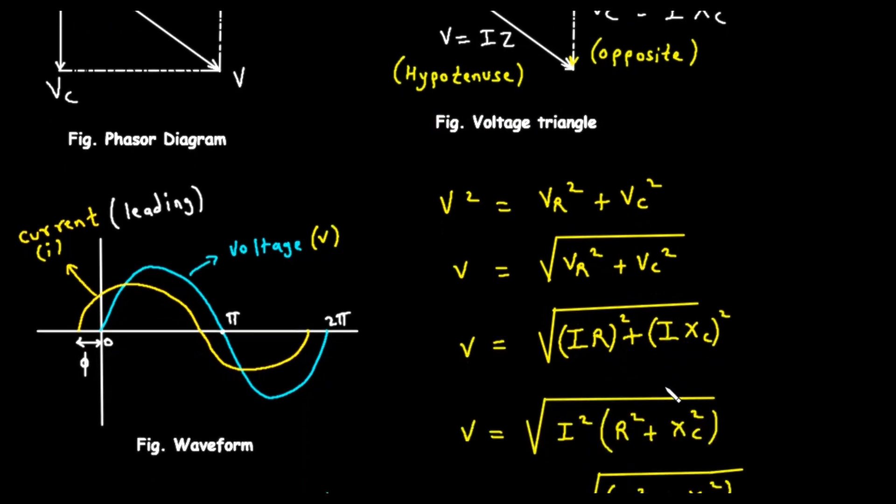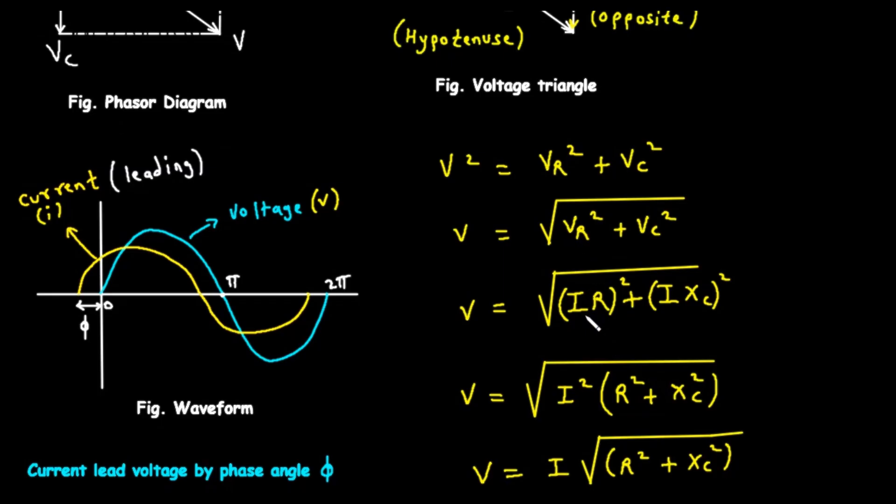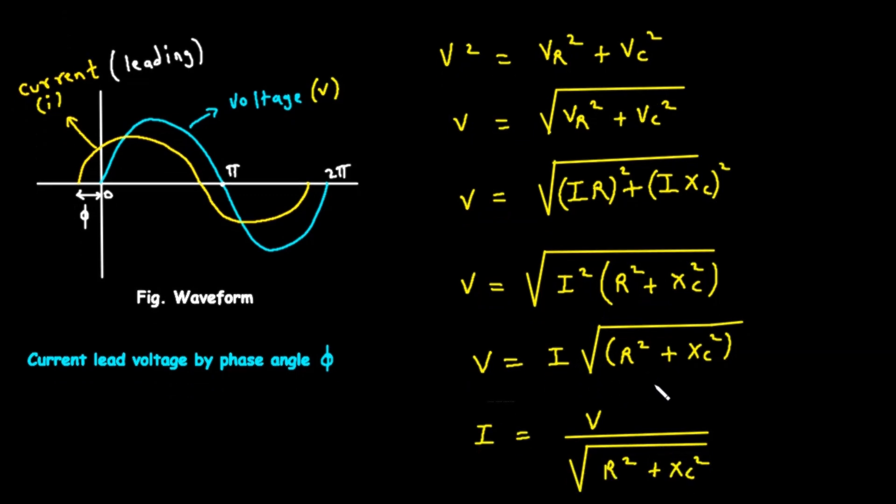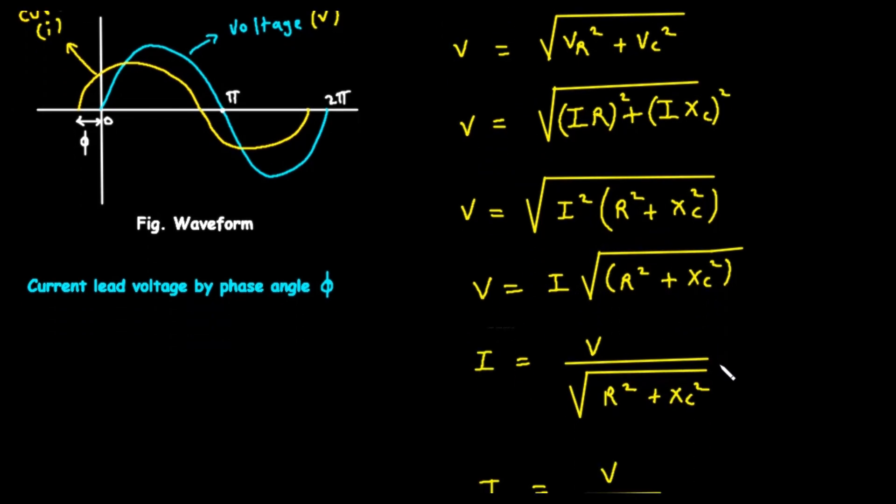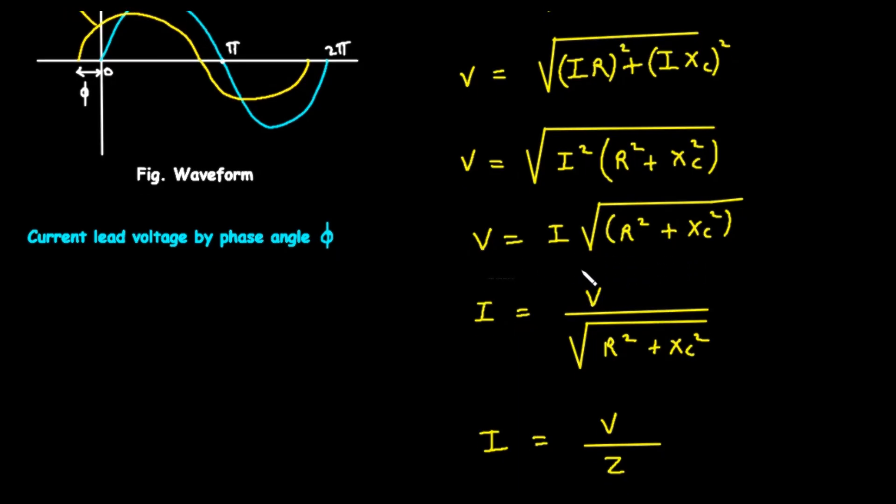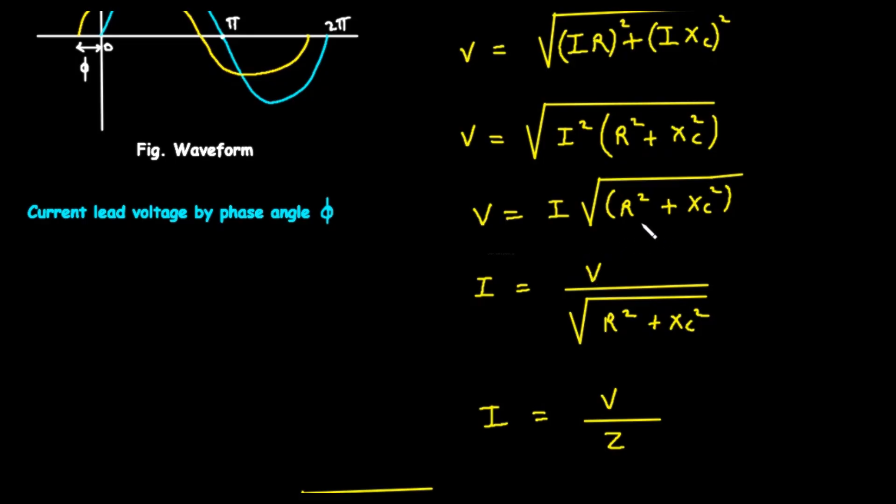Now, let's substitute our earlier formulas into this equation. We know VR is I times R, and VC is I times XC. So V equals the square root of I times R squared, plus I times XC squared. Inside the square root, this becomes I squared times R squared plus I squared times XC squared. We can factor out the I squared term. This gives us V equals the square root of I squared multiplied by the quantity R squared plus XC squared. Since I squared is a perfect square, we can pull it out of the square root, where it just becomes I. This leaves us with our final important equation for voltage, V equals I multiplied by the square root of R squared plus XC squared.